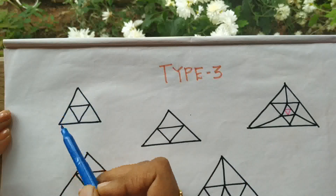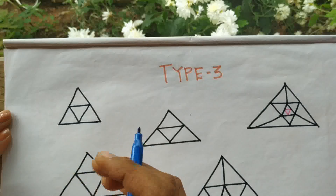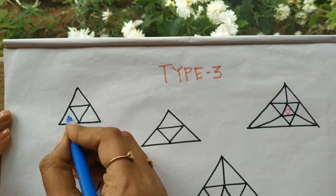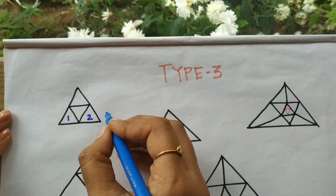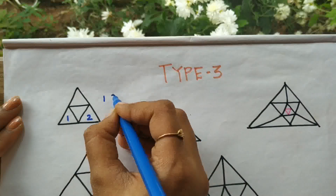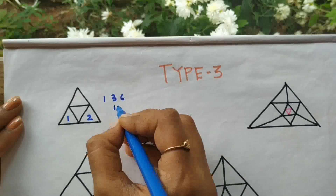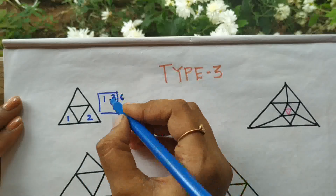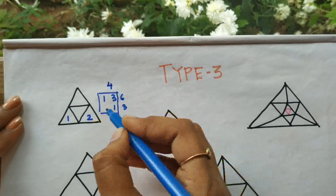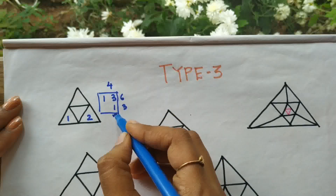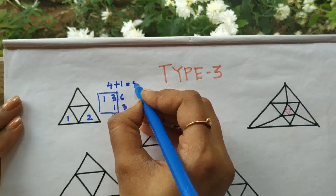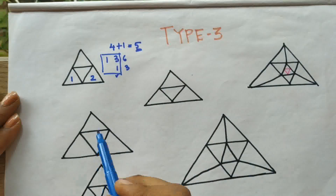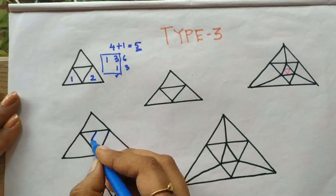Let's try Type 3 sums. This uses a particular base figure we have already seen. For this figure, using the number series: one, three, six — and here we only have two segments, so we take one and three. One plus three equals four, then add the first number, which is one. So four plus one equals five. There are five triangles in this base. Remember this — it will be the base for further questions.